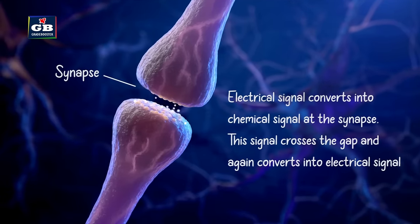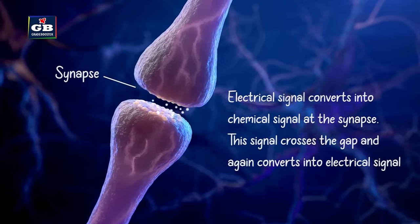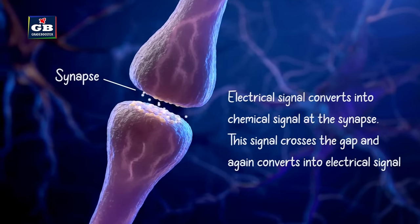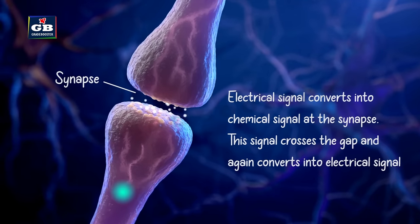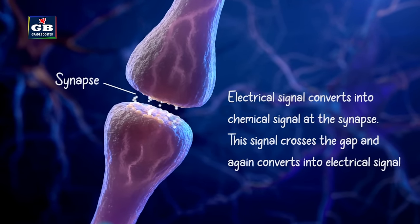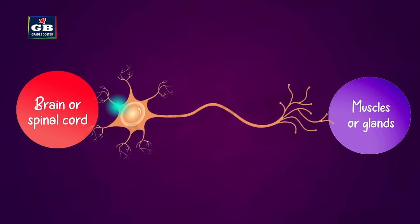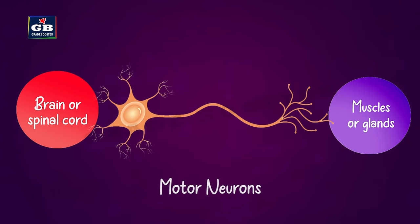At the nerve terminals, the electrical impulse is converted into a chemical signal. This chemical crosses the synapse gap and reaches the dendrites of another neuron, where it is converted back into an electrical signal. Neurons that carry information from sense organs to the brain or spinal cord are called sensory neurons.